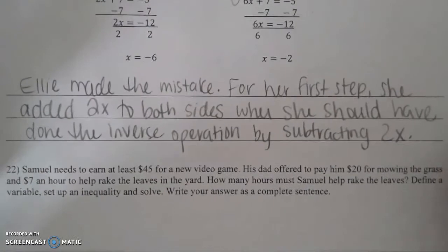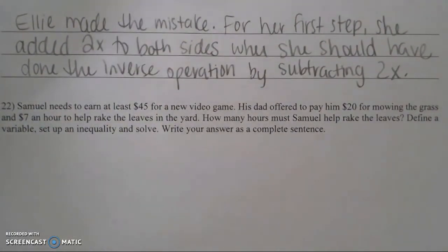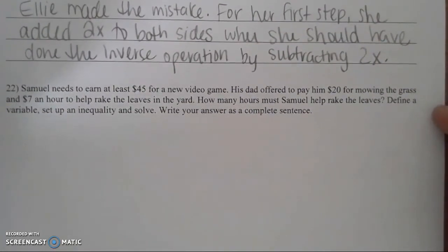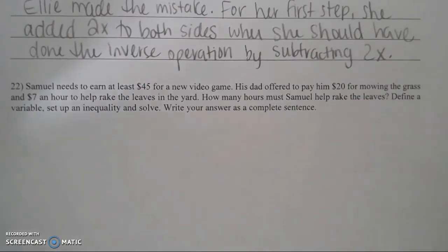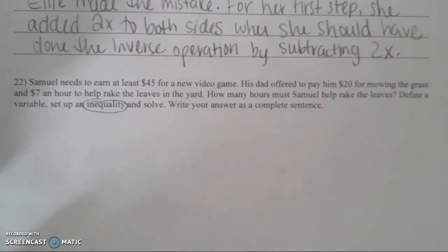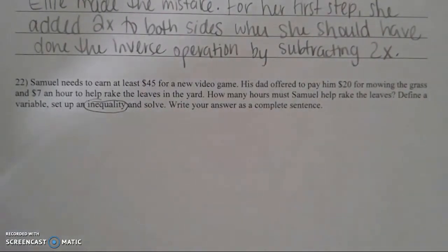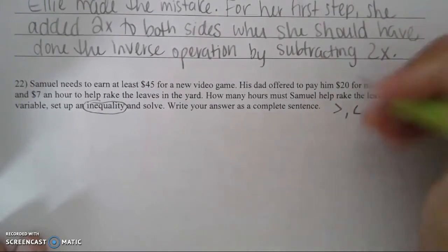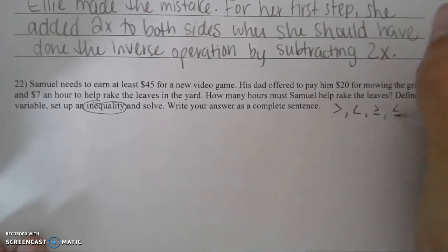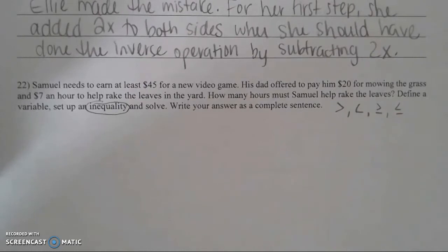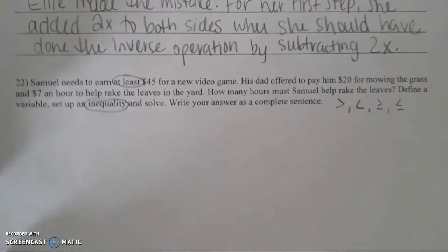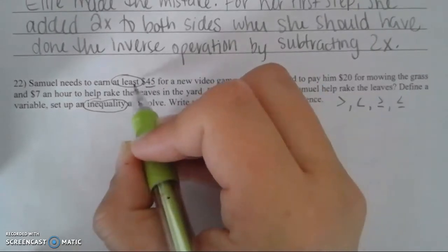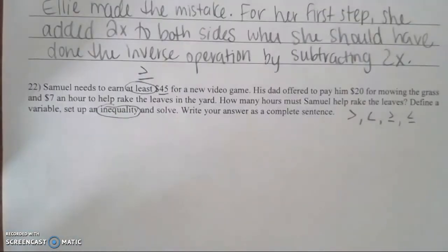The last problem: Samuel needs to earn at least $45 for a new video game. His dad offered $20 for mowing the grass and $7 an hour to rake leaves. We need to find how many hours Samuel must rake leaves. Define a variable, set up an inequality, and solve. Inequalities are similar to equations except instead of equal signs you have less than, greater than, greater than or equal to, or less than or equal to.